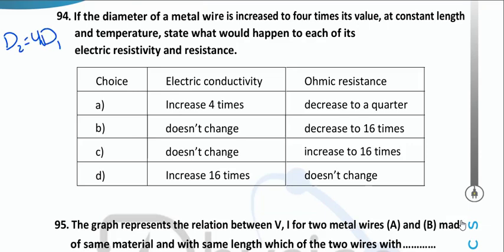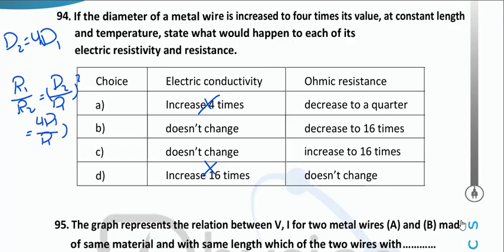If diameter of a metal wire increases to 4 times (d2 = 4d1) at constant length and temperature: conductivity doesn't change. R1/R2 = (d2/d1)² = 16. So R2 = R1/16 — resistance decreases 16 times.